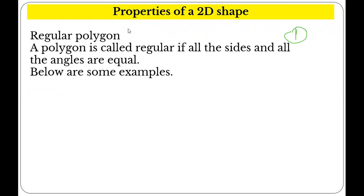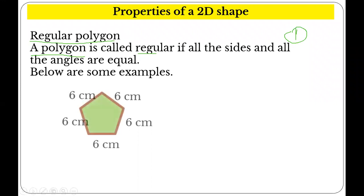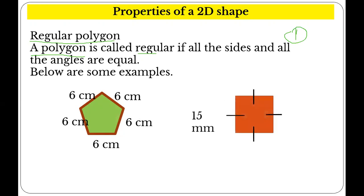As I was saying, a polygon is called a regular polygon if all the sides and all angles are equal. These are the examples. This is a regular polygon because it has equal sides. A square is also regular because a square always has equal sides.